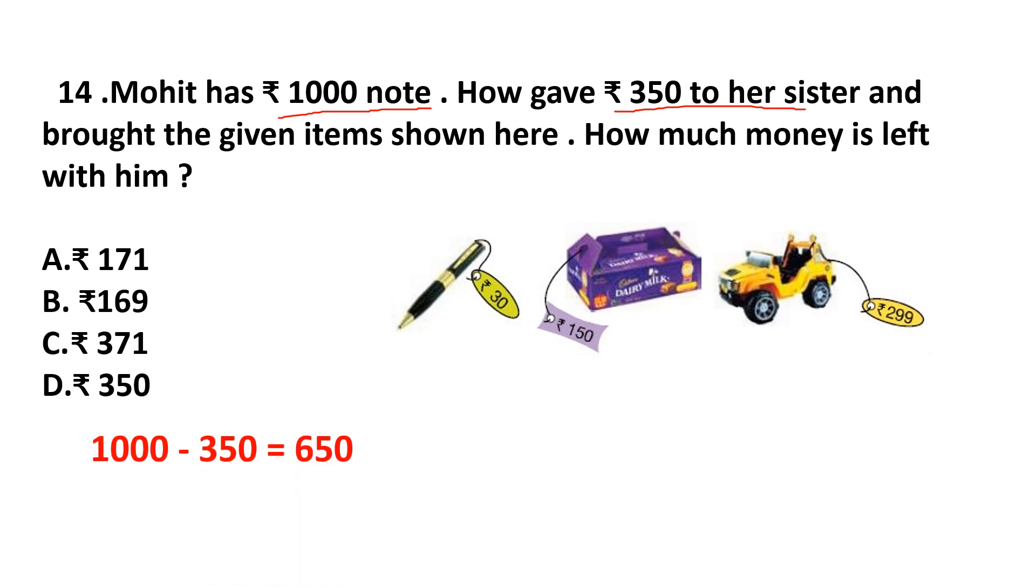How much money is left with him now? Rs. 1,000 minus 350 is Rs. 650. Then, he bought these items. So total money he spent on these items is Rs. 30 plus Rs. 150 plus Rs. 299. So total money he spent is Rs. 479. So how much money is left with him now? Rs. 650 minus Rs. 479. That is Rs. 171. Answer is option A, Rs. 171.